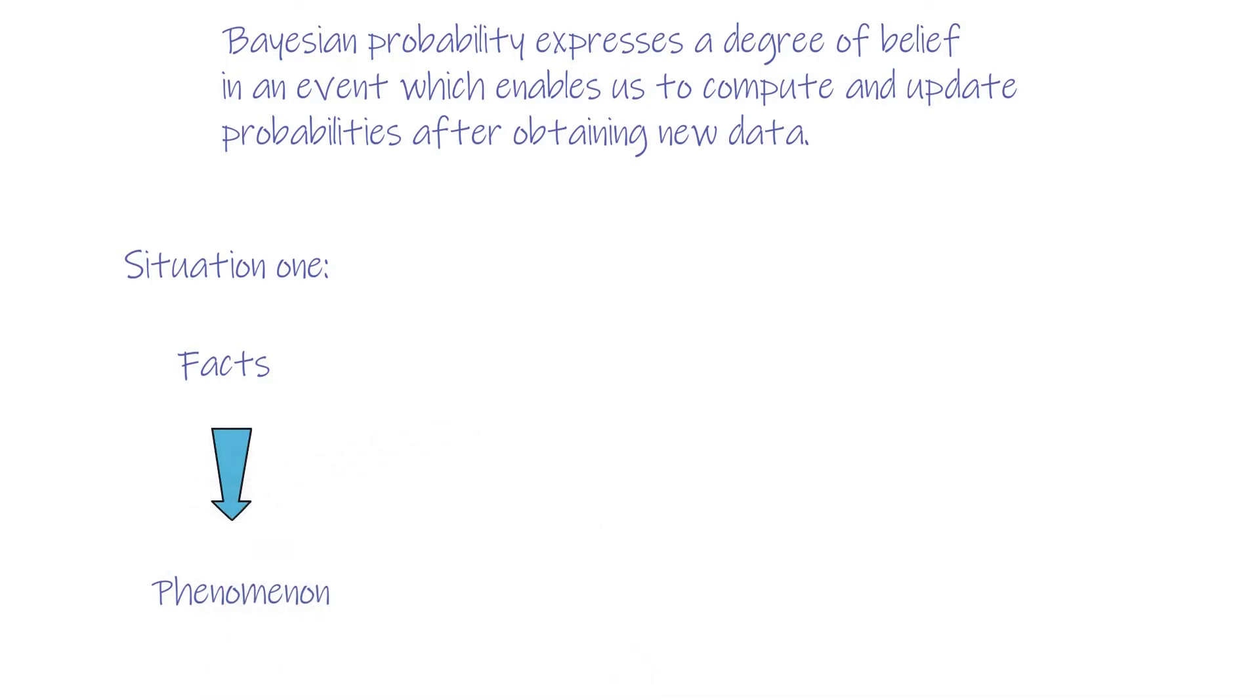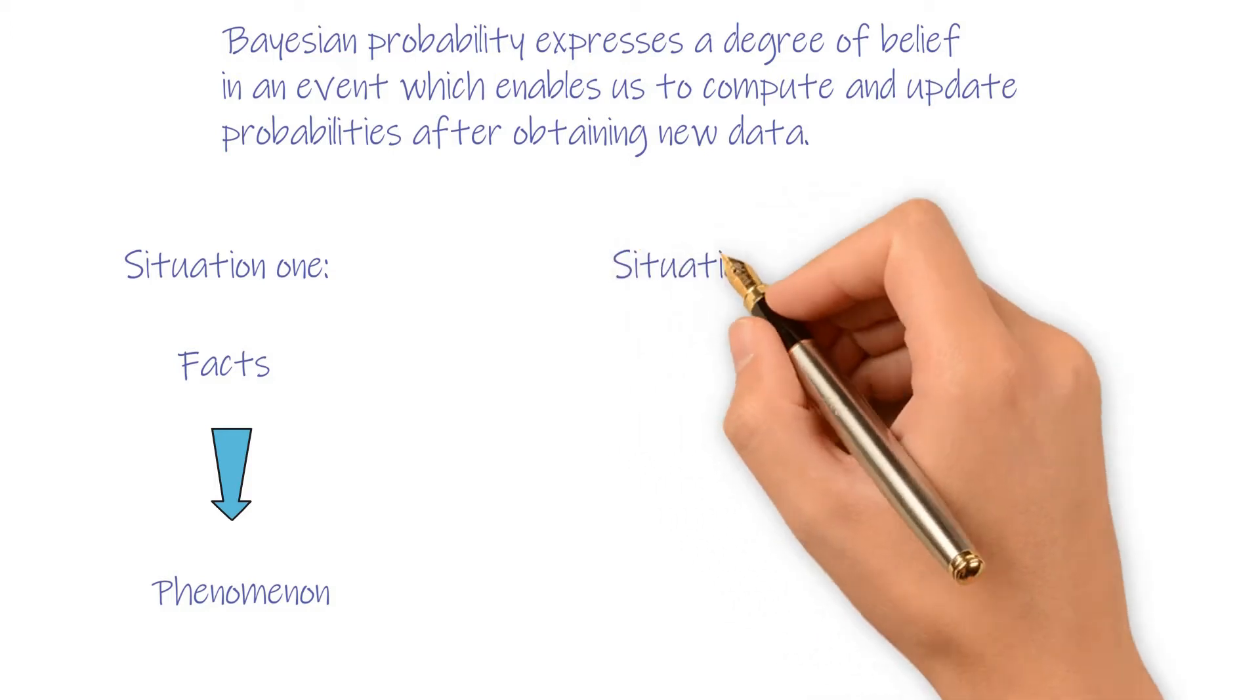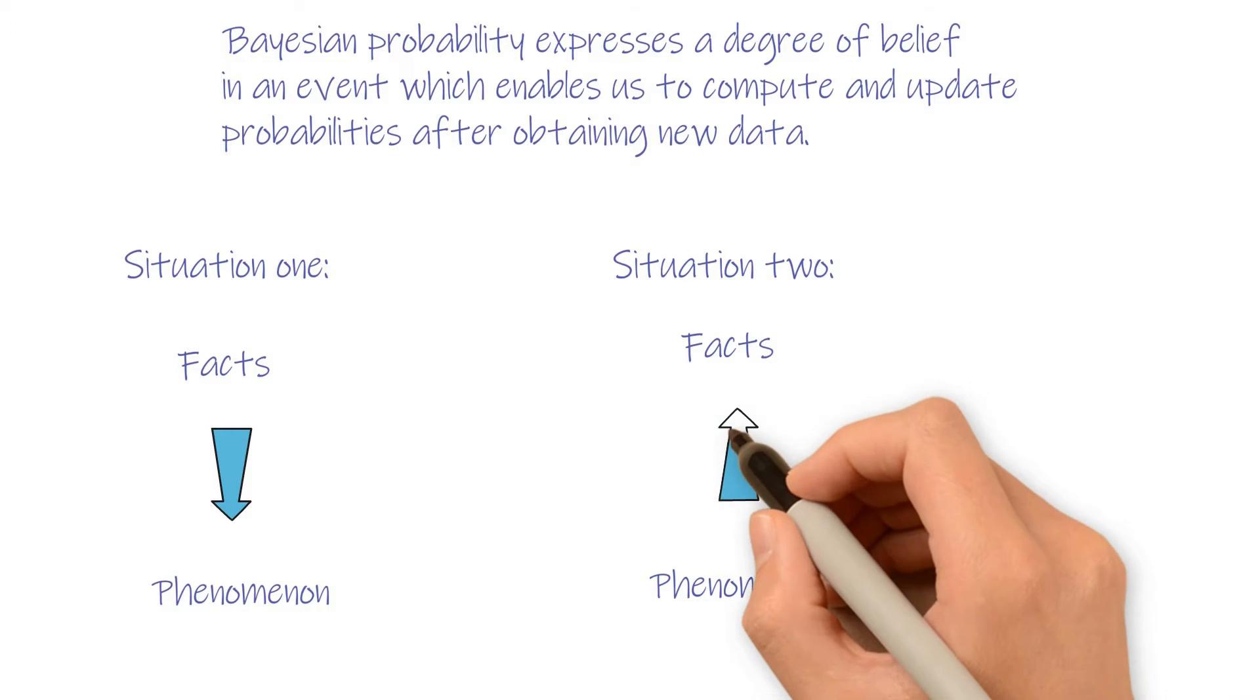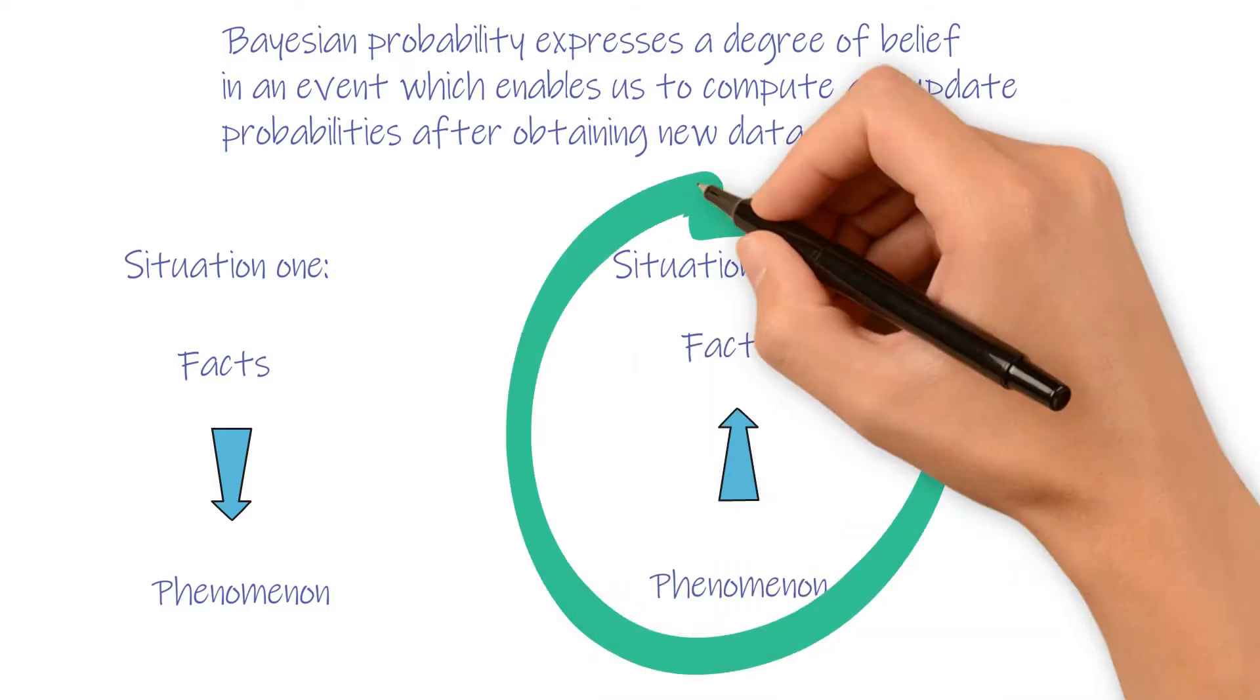For example, if we know the fact that a coin is perfectly even, then we can come to the conclusion that to toss a coin, the probability of showing each side is 50%. The other one is we know a phenomenon and want to find out its causing facts. We need to use Bayesian probability to solve this kind of problem.